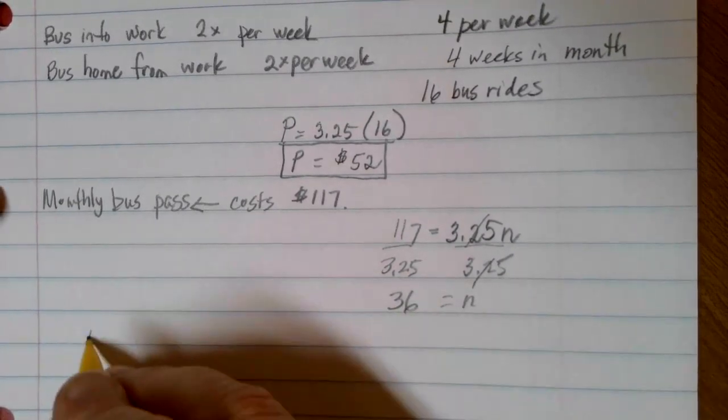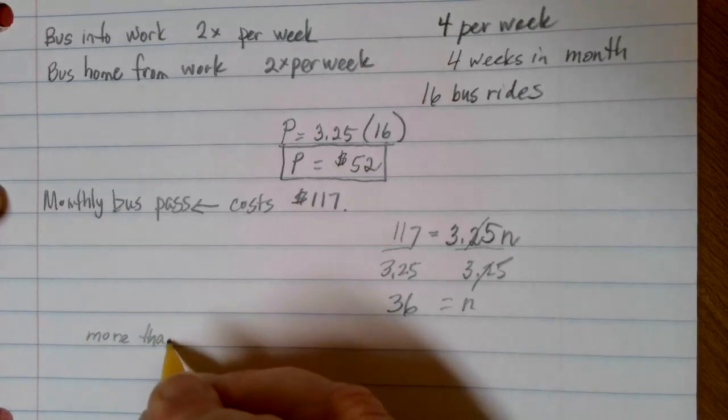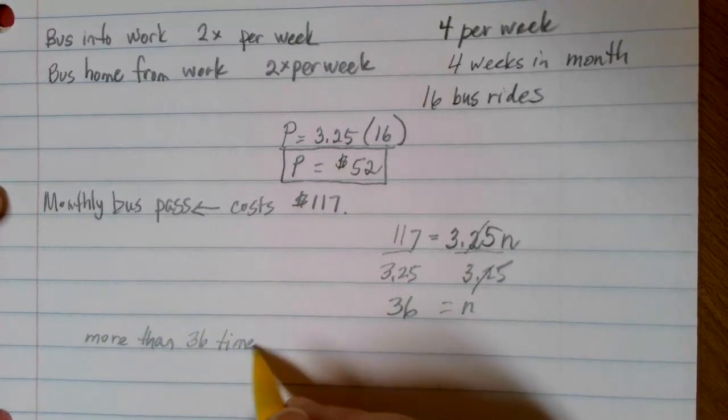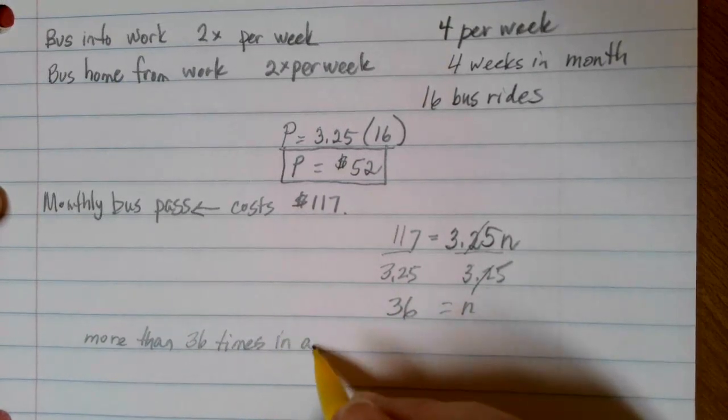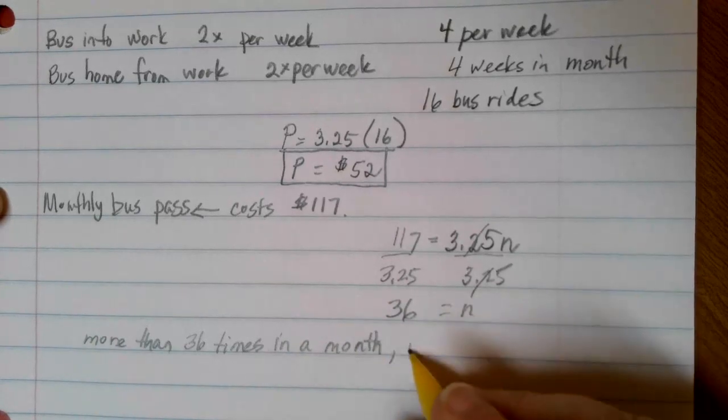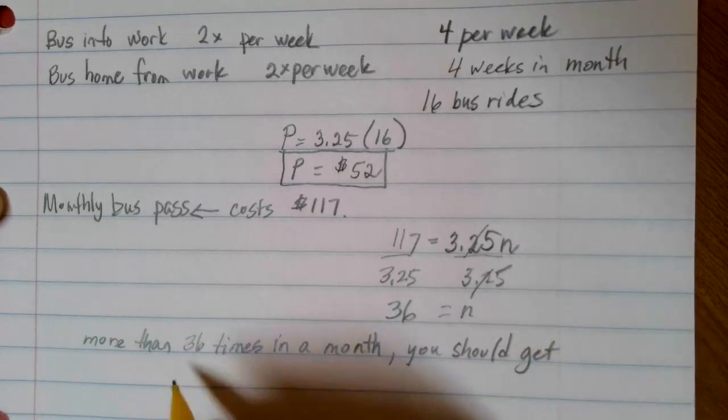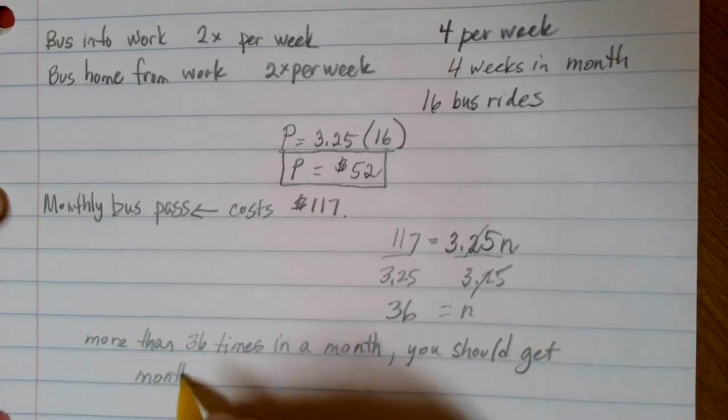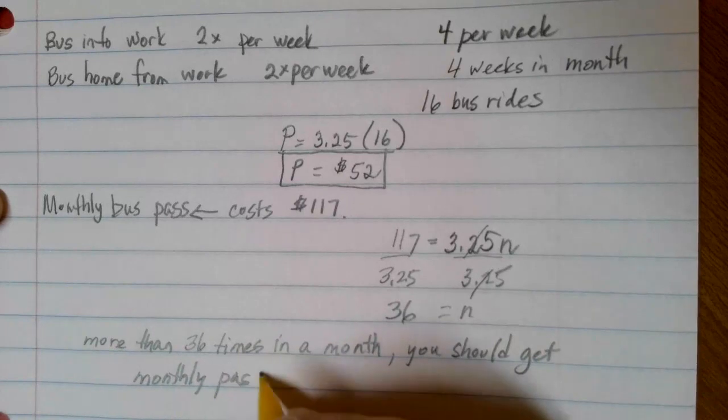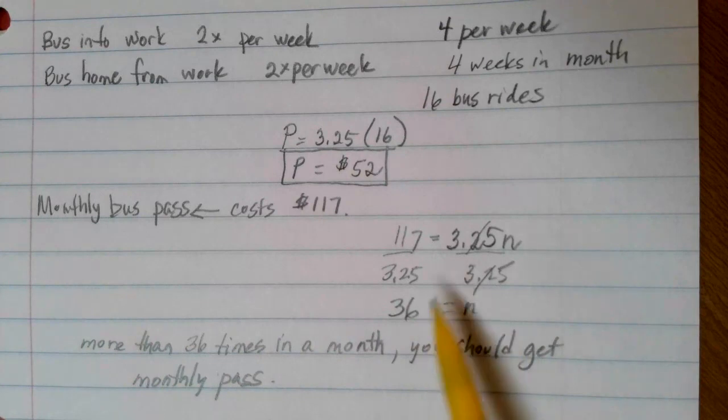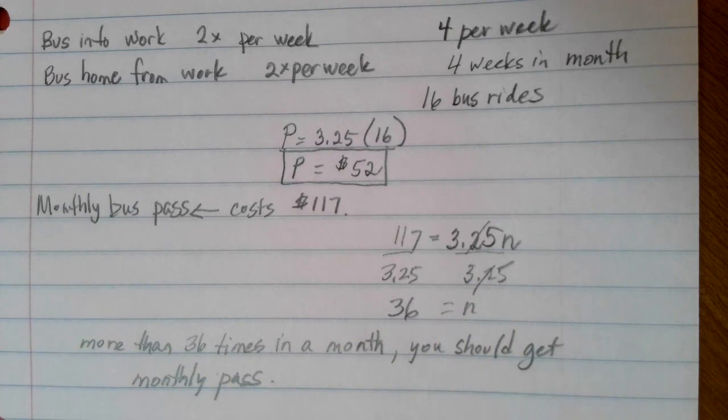However, if you're going to end up riding more than 36 times in a month, you should get the monthly bus pass. That would be the most economical. Because after 36, you'd still be paying for those individual bus rides, but if you have the monthly pass, you're still just paying that $117 for the whole month, no matter what.